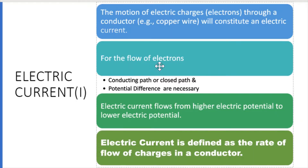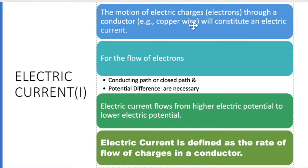Now let us see the definition and concept of electric current. Electric current is denoted by the symbol capital I. The motion of electric charges through the conductor constitutes an electric current. The moving electric charges are electrons, so the motion of electrons through the conductor is known as electric current. For electrons to flow, two important things are needed: a closed path and a potential difference. Electric current is defined as the rate of flow of charges in the conductor.